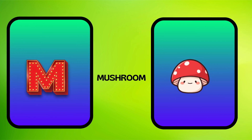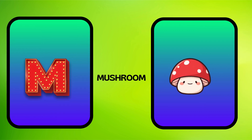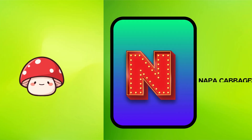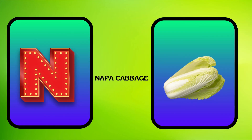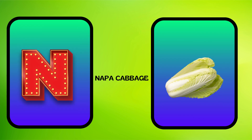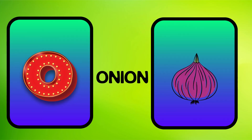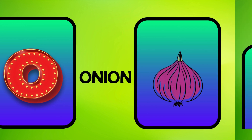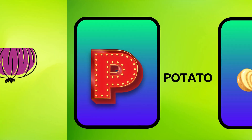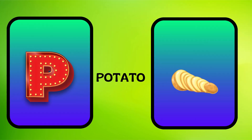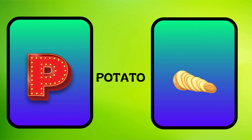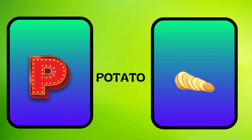M is for mushroom, muh, mushroom. N is for napa cabbage, nuh, napa cabbage. O is for onion, o, onion. P is for potato, puh, potato.